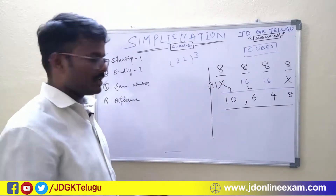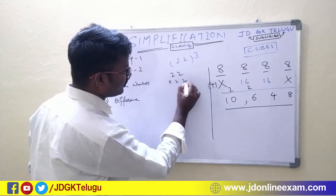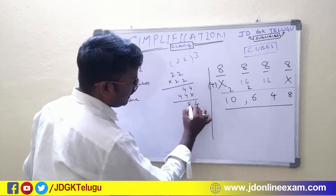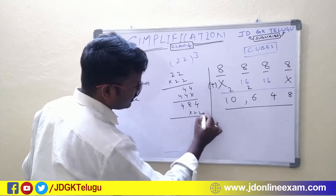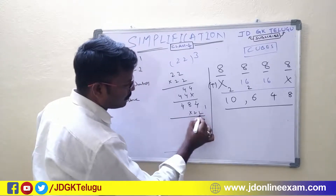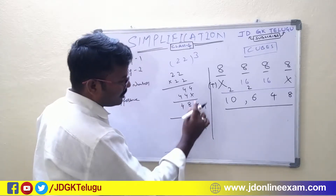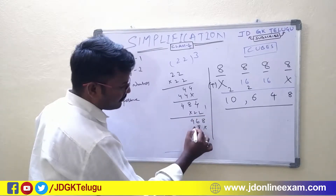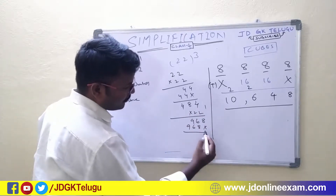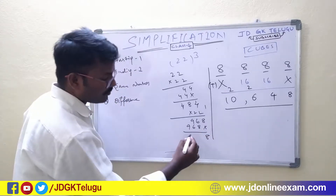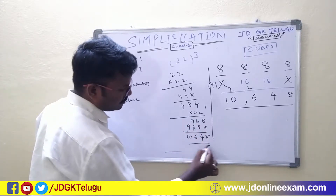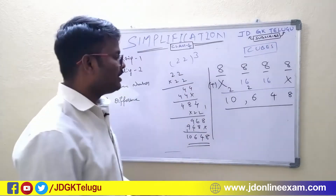I will tell you more information. 22 into 22: 2 to the 4 gives 4, 8, 4. Multiplying again: 2 times 8 is 16, 2 times 8 plus 1 is 968. Next, 2 times 8 is 16, 1 plus 6 plus 8 gives 9, so we have 968 and 968. We add just the 8: 8 plus 6 is 14. So 16 gives us 10648. 22 cube is very easy.